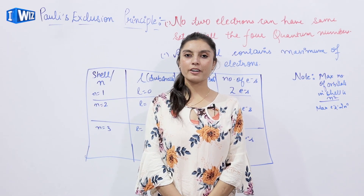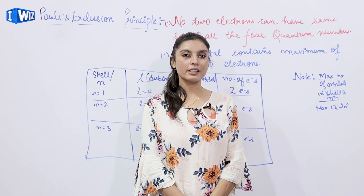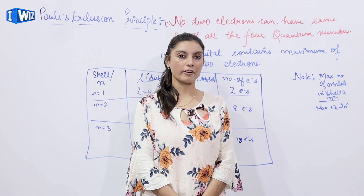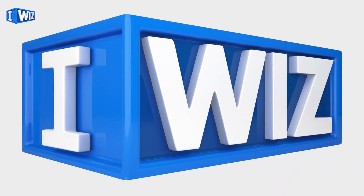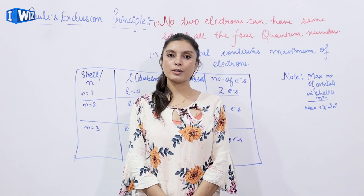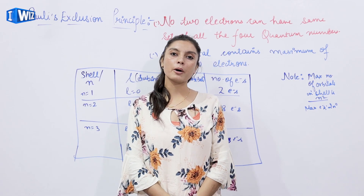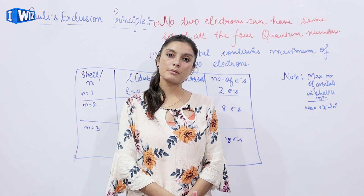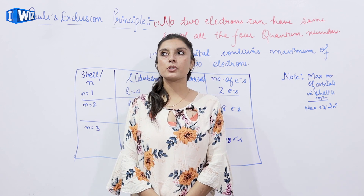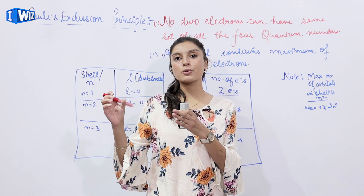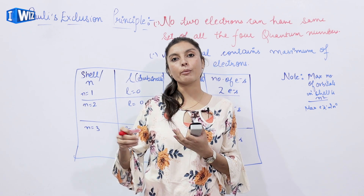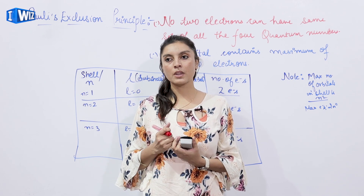Hello students, I'm Jaspreet Kaur and today we are going to study the new topic: Pauli's Exclusion Principle, which belongs to chapter number two, the Structure of Atom. So till now we have studied about different concepts related to quantum numbers and other principles and theories. Today we are going to study about the filling of orbitals — how they are filled and how many electrons a particular orbital can have.